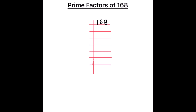As 168 is an even number, it is easily divisible by 2. 2 times 8 is 16 and 2 times 4 is 8, giving us 84. Again we are going to divide 84 by 2. 2 times 4 is 8 and 2 times 2 is 4, giving us 42.